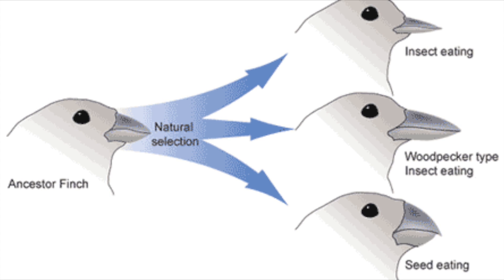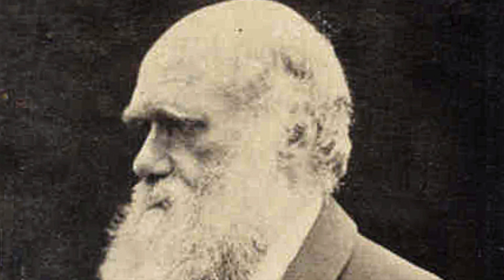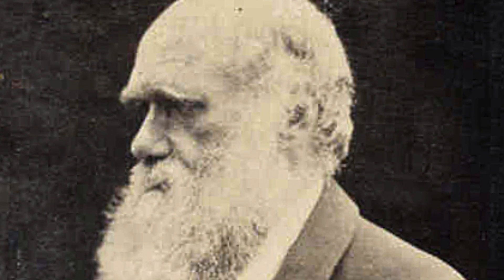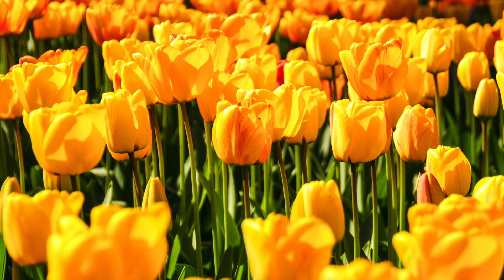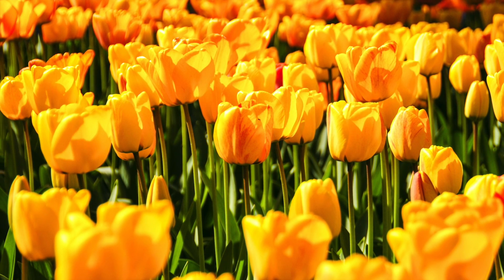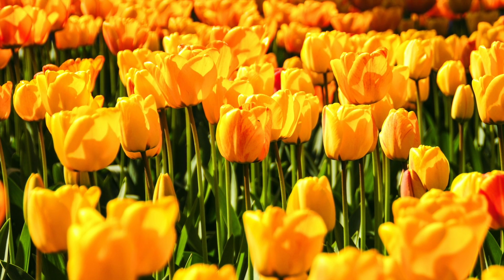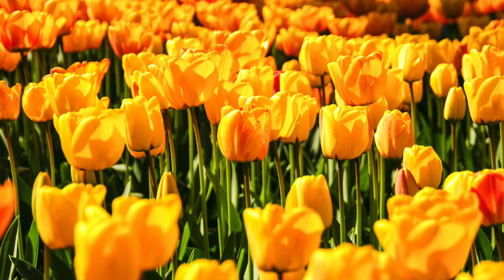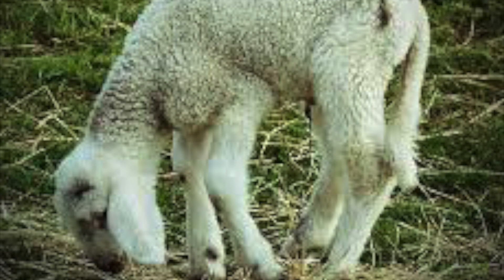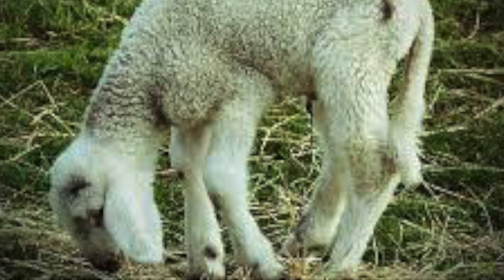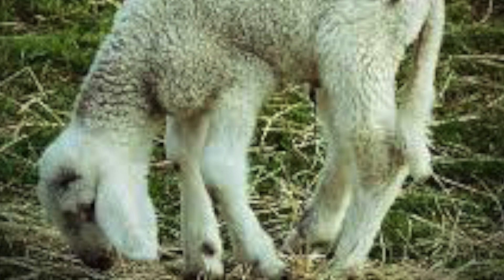Charles Darwin was the first person to describe natural selection, which is also known as survival of the fittest. Animals and plants often produce more offspring than needed, especially plants. This meant that those which were better adapted and had the best genes were more likely to stay alive. Animals that are not as strong or as clever are more likely to get eaten, and their genes will not get passed on.